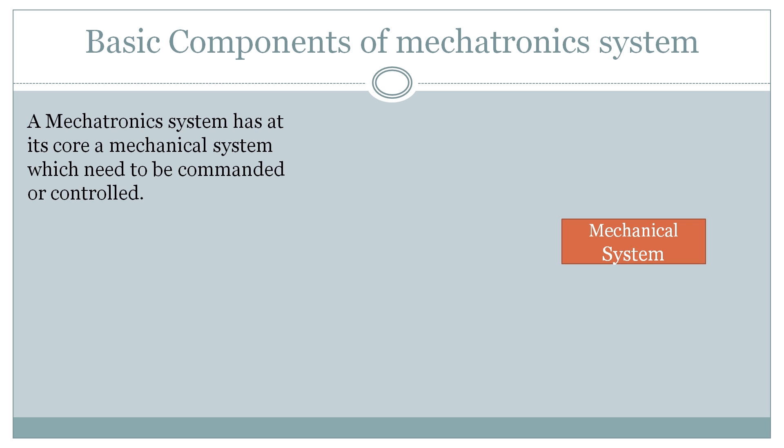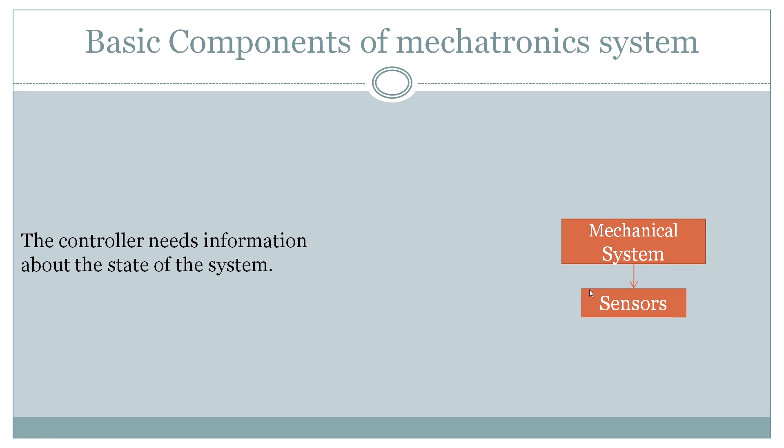Before we can control and command the mechanical system, we need to know the state of the system. The controller needs information about the state of the system, and to retrieve that information from the mechanical system, we require sensors. Sensors might include proximity sensors, velocity sensors, temperature sensors, displacement or deformation sensors, or ultrasonic sensors — many sensors are available according to requirement.